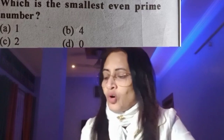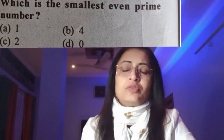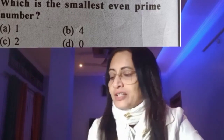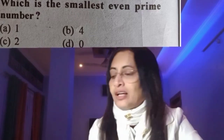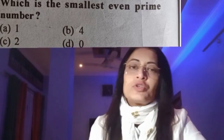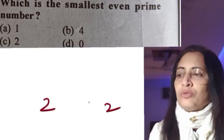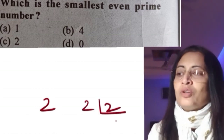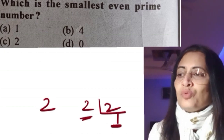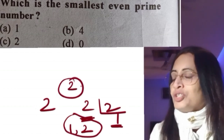Which is the smallest even prime number? Prime numbers are divisible by only 1 and the number itself, and even numbers are divisible by 2. The smallest even number is 2. Its only factors are 1 and 2 — one and the number itself — so the answer is 2, which is option C.